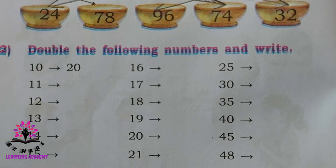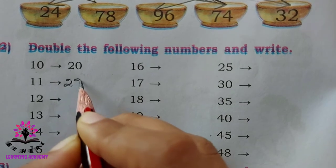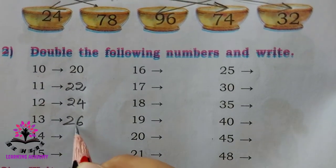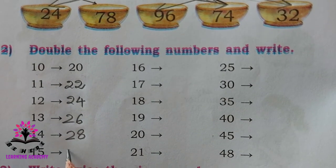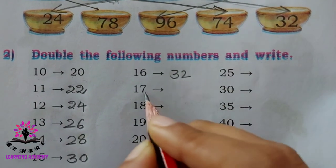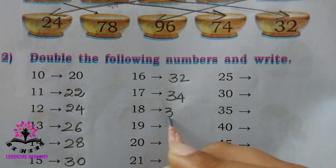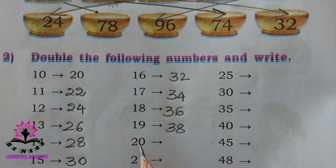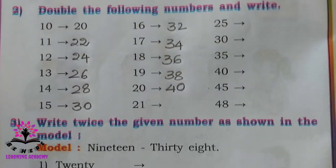Double the following numbers and write. 10 is 20, 11 is 22, 12 is 24, 13 is 26, 14 is 28, 15 is 30, 16 is 32, 17 is 34, 18 is 36, 19 is 38, 20 is 40. The remaining numbers you have to do by yourself.